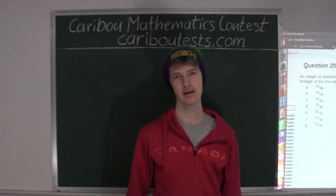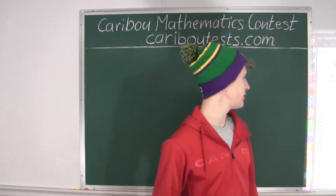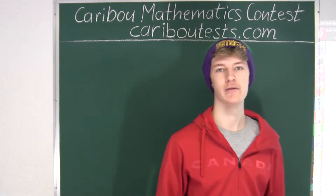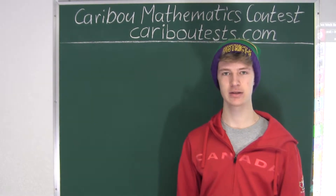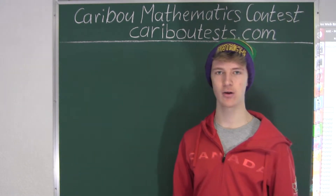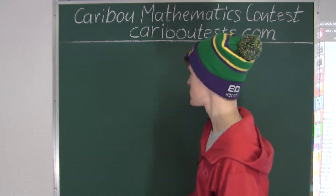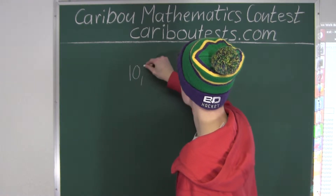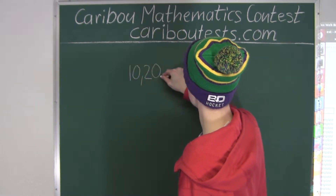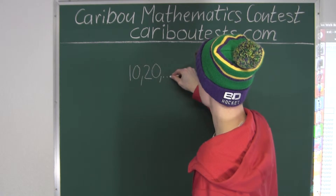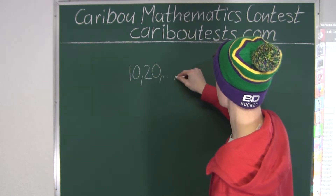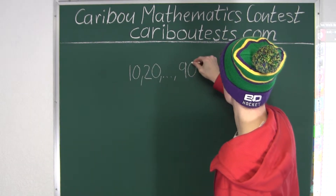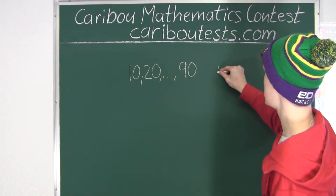Now let's first use the bit of information where it says, if 0 is considered a multiple of every digit. We'll start by writing down all the multiples of 10. So we have 10, 20, and then all the way up to 90, because that's the last multiple of 10 before the end of the interval. That would be 9 numbers.